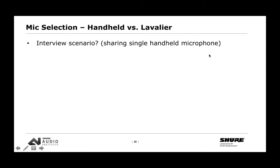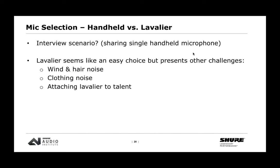When considering mic selection — handheld versus lavalier — in an interview scenario where a reporter is out in the street sharing a single microphone, walking and talking in potentially challenging conditions, a handheld is the better choice. It allows extra reach, performs better outdoors against the elements, and can be shared easily between two or more people in an interview situation.